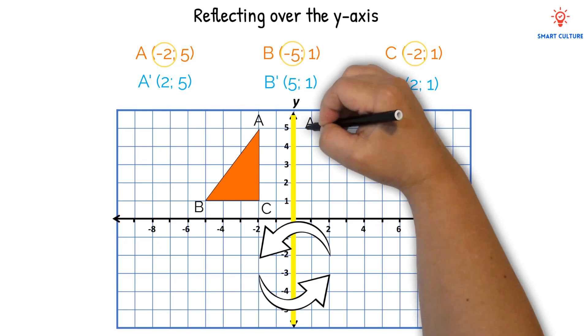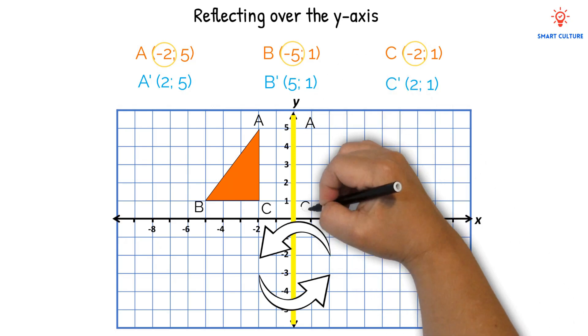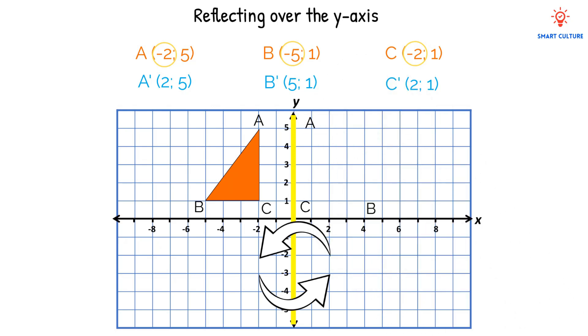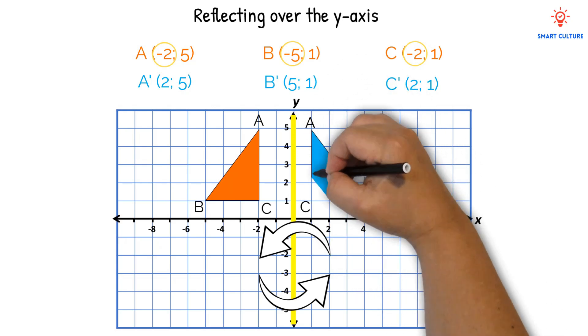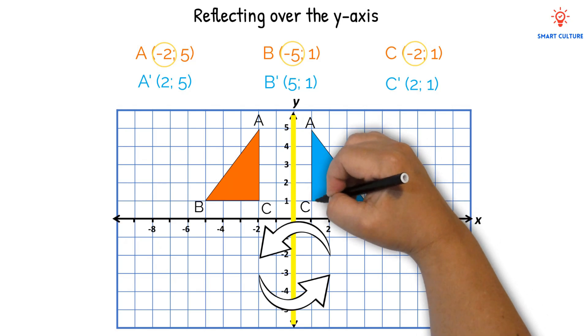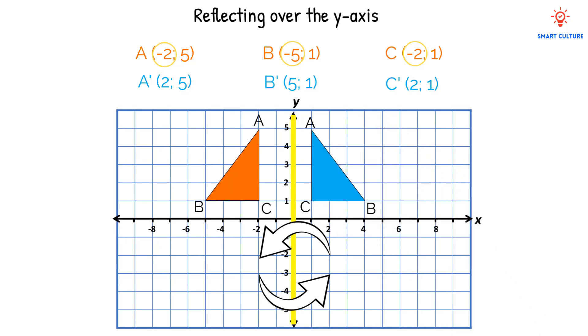Let's plot those points, and then we can draw our triangle that is reflected over the y-axis. Whenever you reflect an image over the y-axis, the y-value will remain unchanged and the x-value will become its opposite.